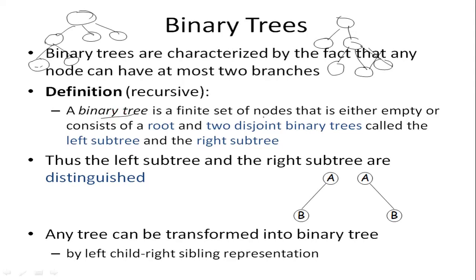The definition of a binary tree: a binary tree is a finite set of nodes that is either an empty tree, or it consists of a root node and two disjoint binary trees. So it will have a root node and two disjoint sub-trees. These children can be a sub-tree or a leaf node. The child to the left is called the left child or left sub-tree, and to the right it is the right child or right sub-tree.